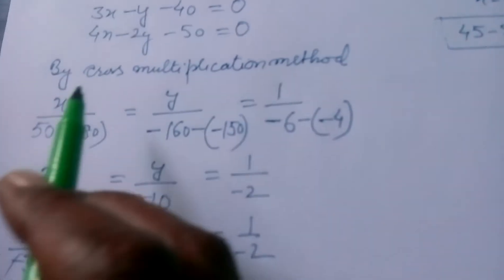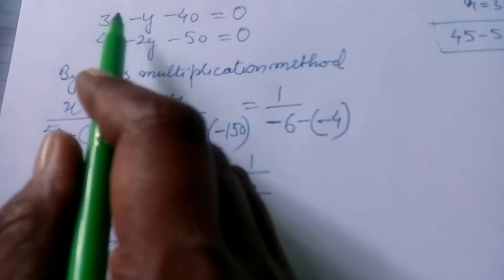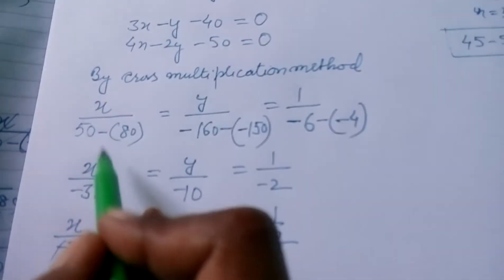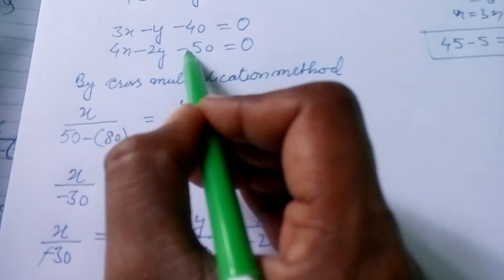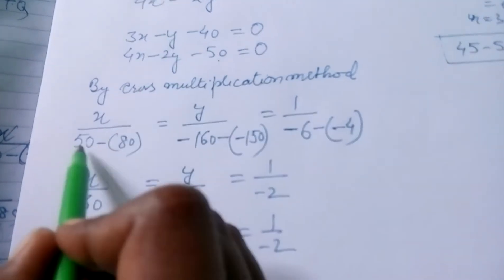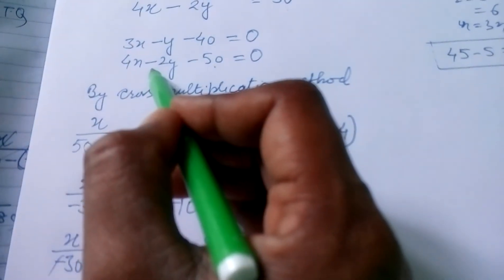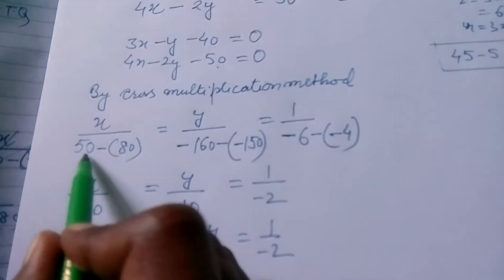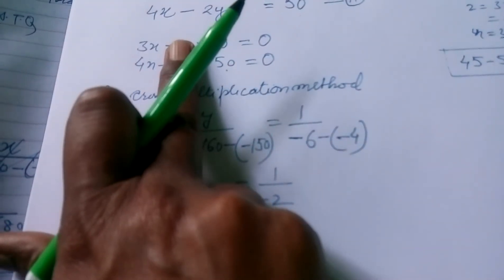Solving by cross multiplication method — for X, we ignore the X column. Calculating: (−1)(−50) − (−2)(−40) = 50 − 80 = −30. So we get X upon −30 for the numerator of X.